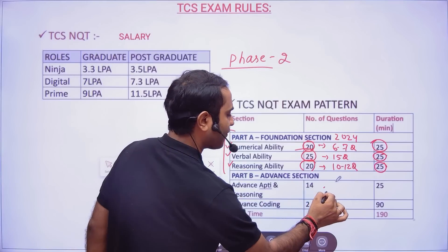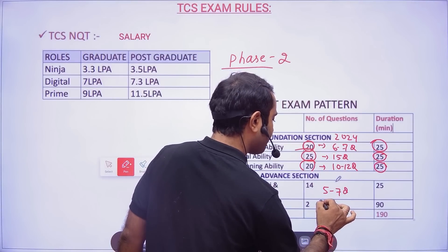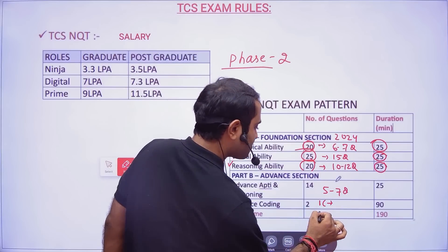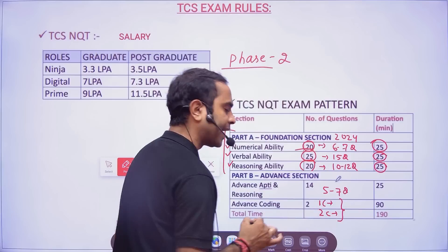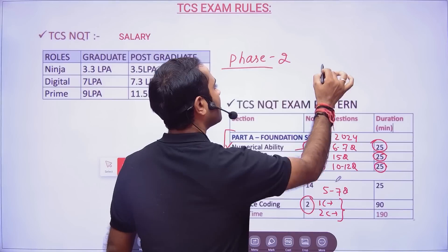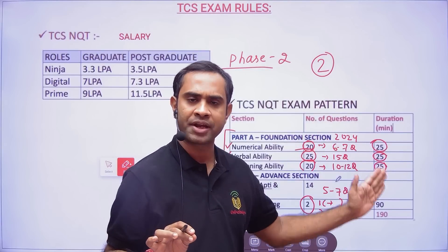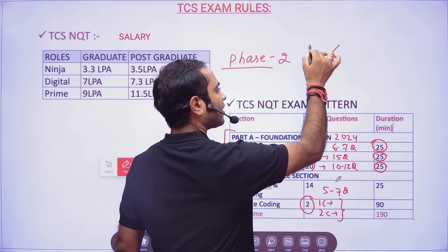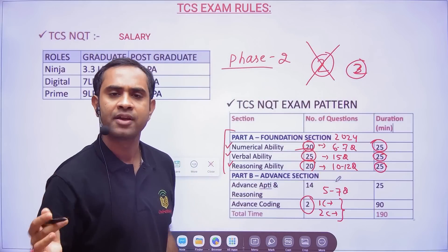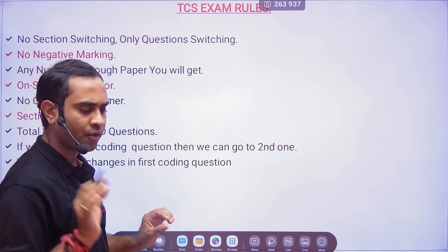In advanced aptitude, students solved 5 to 7 questions. For advanced coding, if you solve one coding question you will be called for a digital interview, and if you solve both coding questions you will be called for a prime interview. Many students claim there are three coding questions, but in 2024 there were only two. In 2025 there will also be two coding questions — there is currently no information confirming three coding questions.